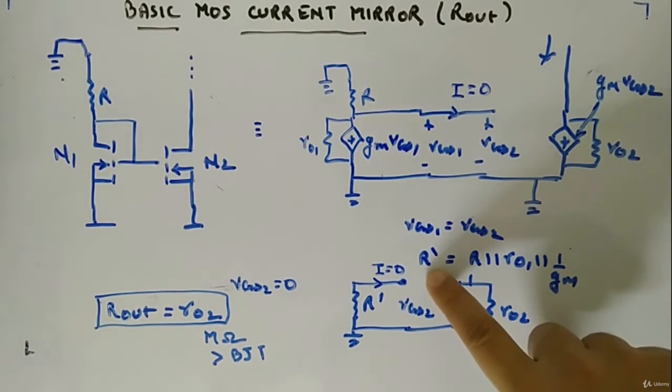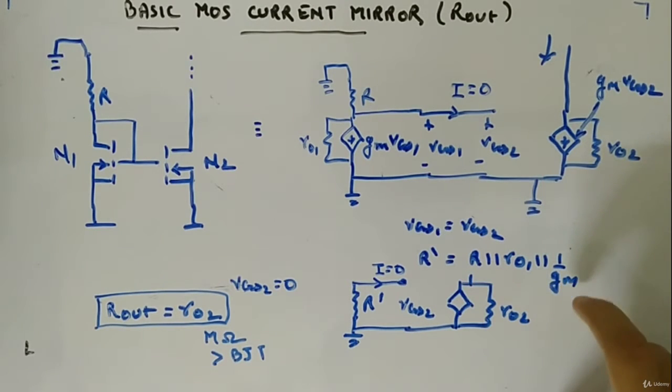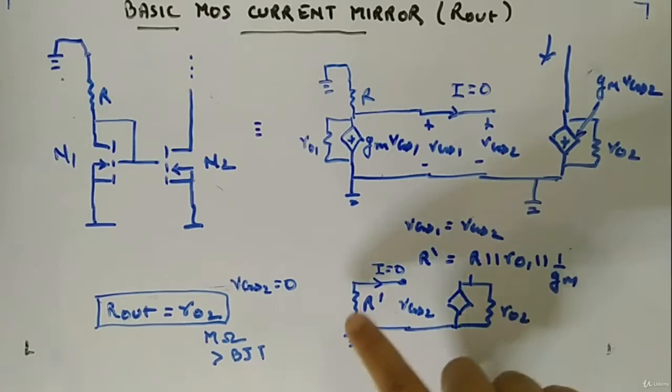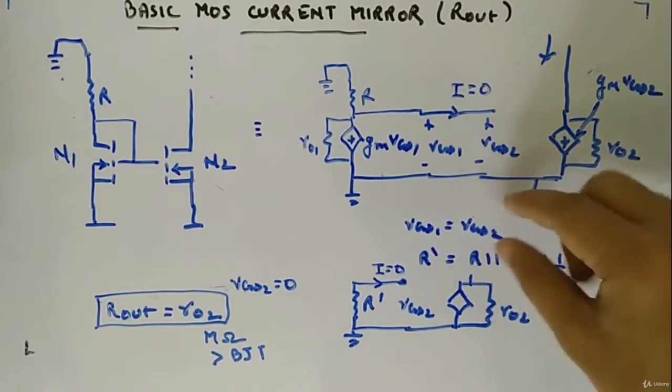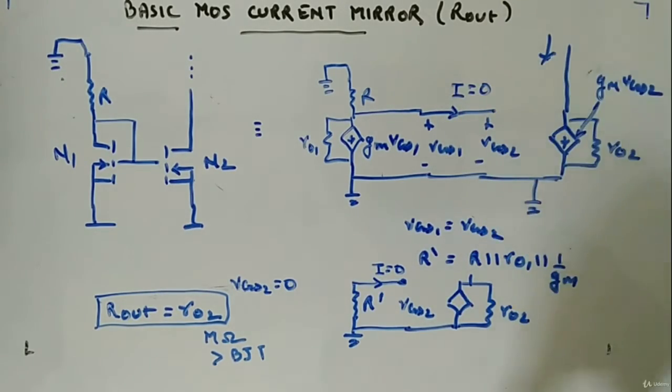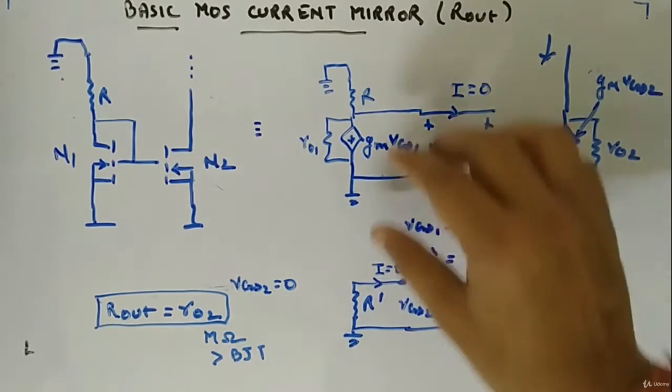I will replace all the equivalent resistance with R dash, that is R parallel RO1 parallel 1 by GM. So this is how the circuit will look like. And VGS1 is equal to VGS2. You can see that, so VGS2 is here, R dash.